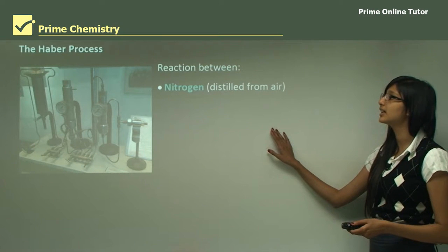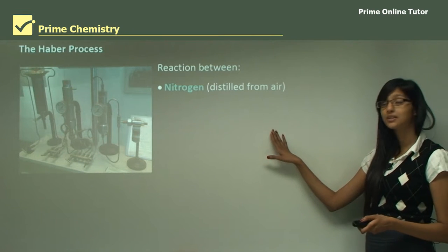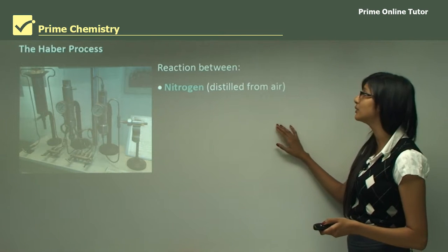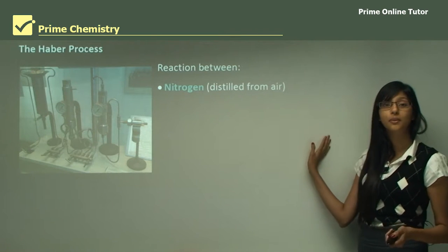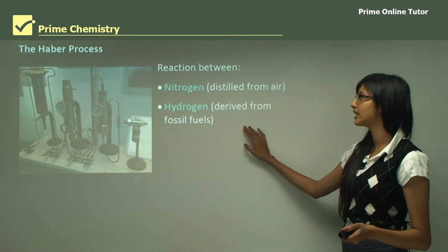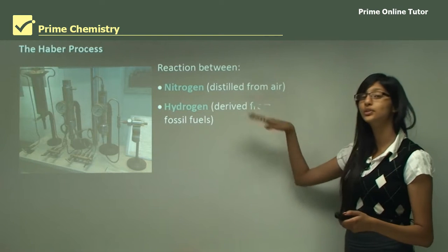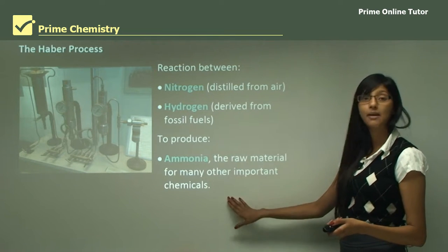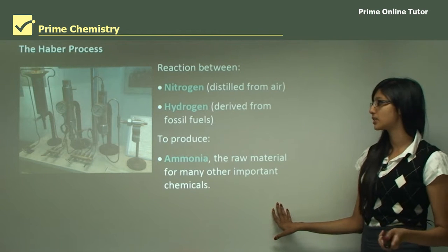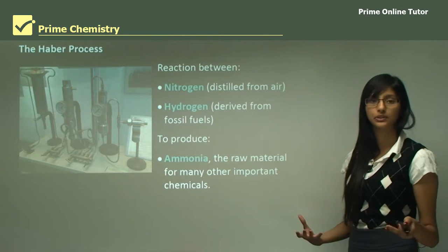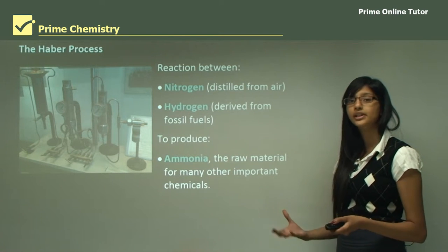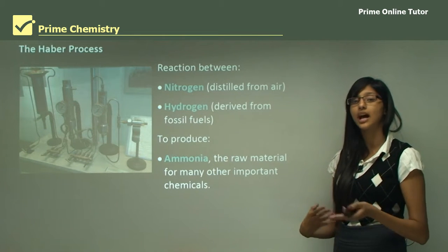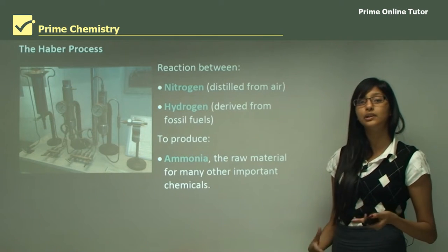The Haber process involves the reaction between nitrogen, which is distilled from air, and hydrogen derived from fossil fuel. These two elements join together to produce ammonia, which is the raw material for many other important chemicals that would be further used in production.